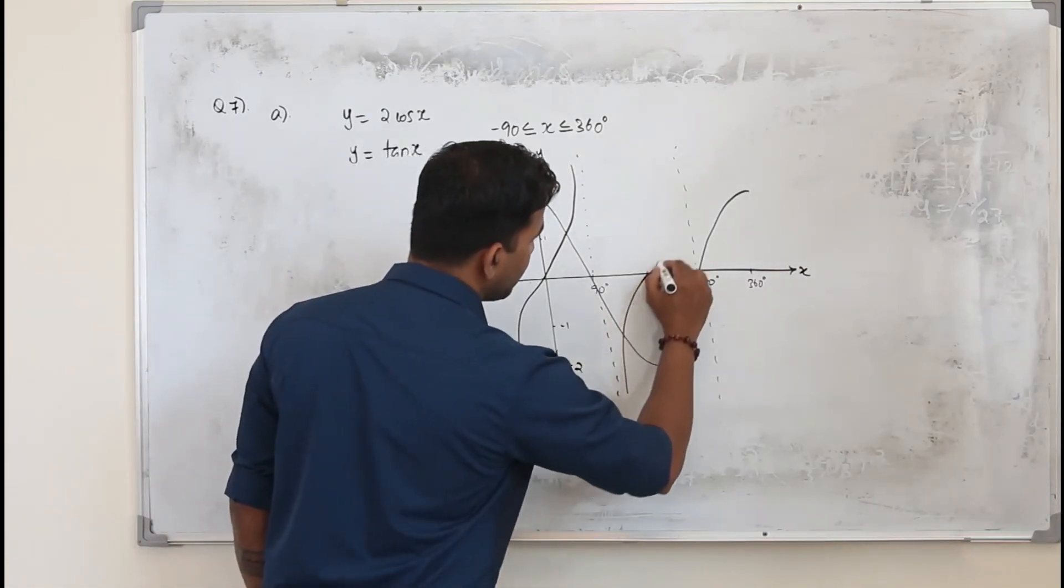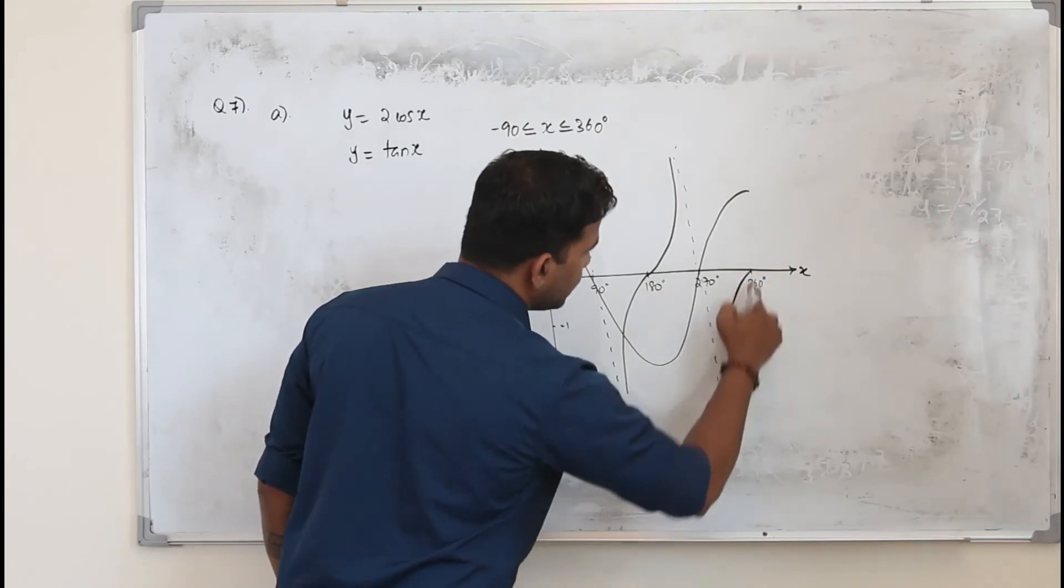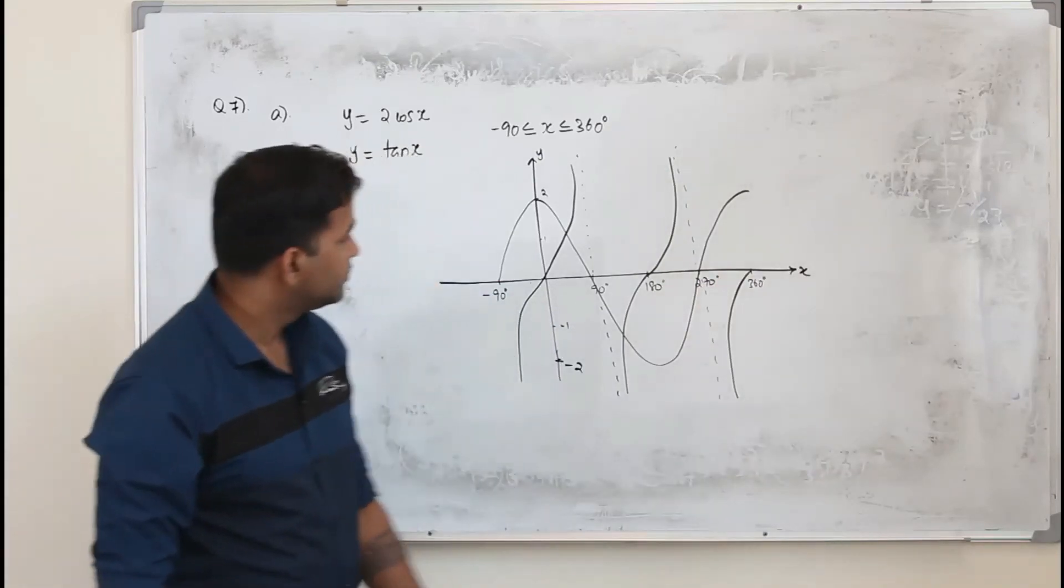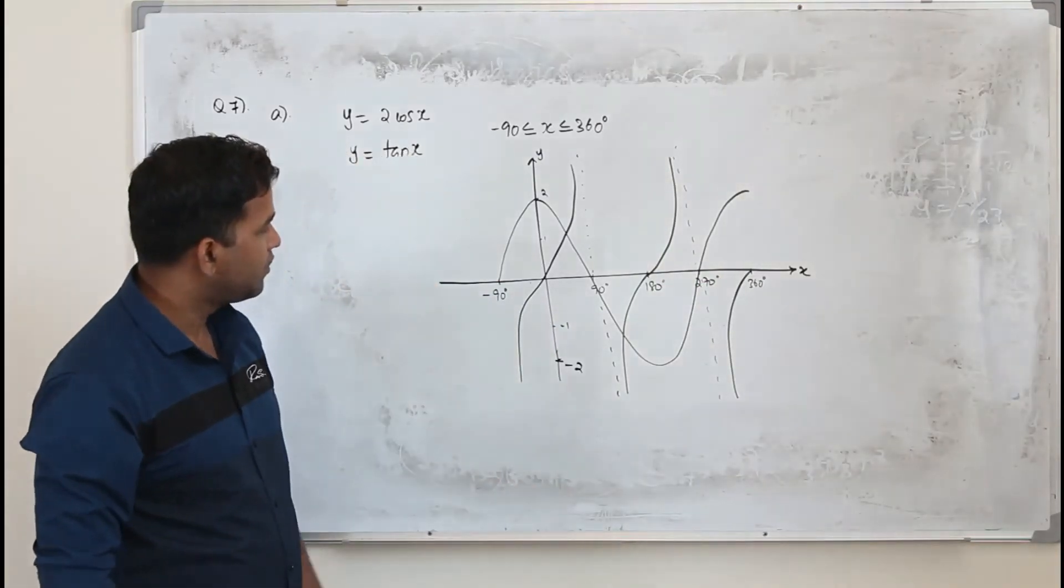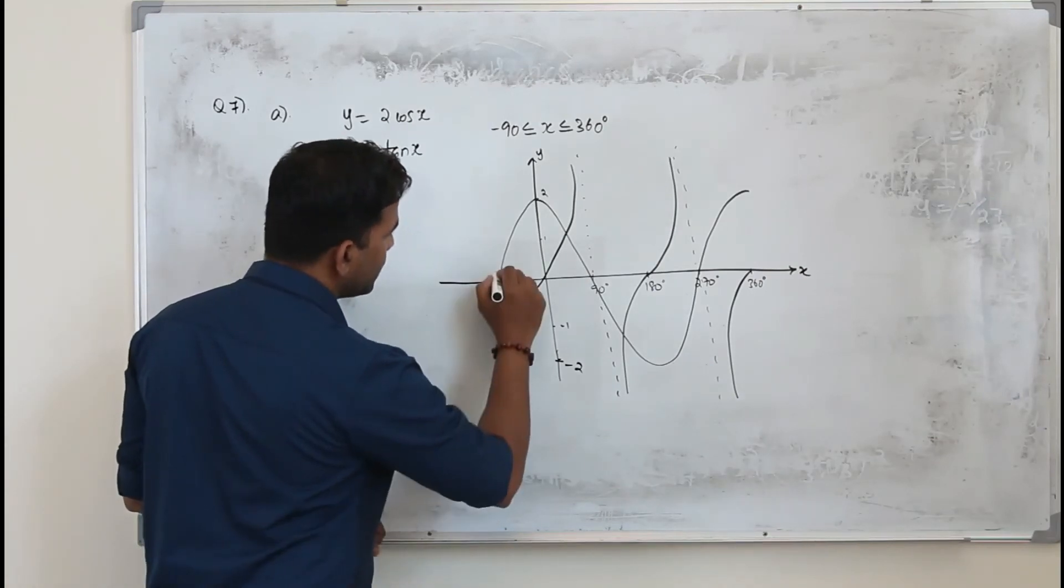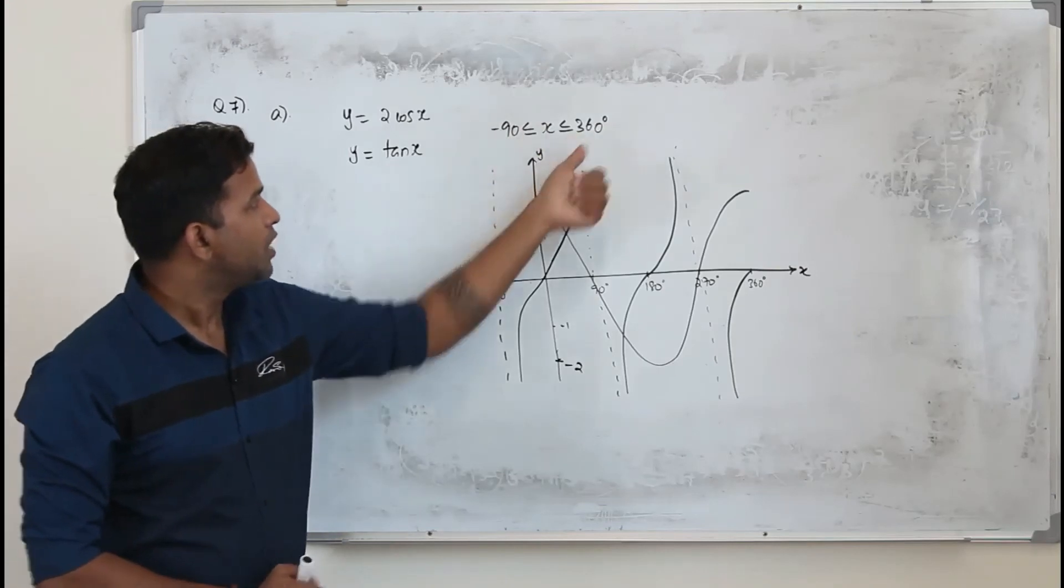Don't draw the part here because it will go off the limit. This is your tangent graph from -90° to 360° with asymptotes at -90°, 90°, and 270°.